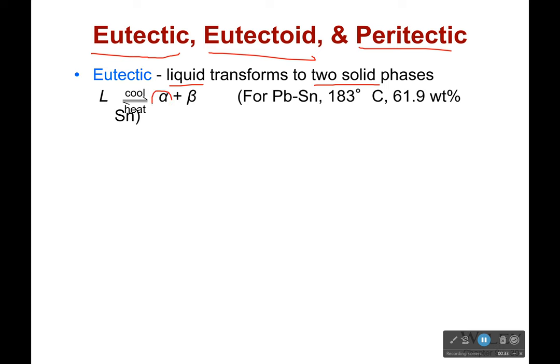And so one of those components is going to be primarily one structure, like in this case it could be lead. And the other component would be primarily the other structure, which would be tin.